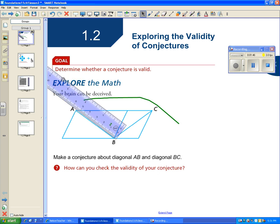So that's how we check the validity of our conjecture. Our conjecture was that AB was longer. When, in fact, we go to measure it, we find them to be the same length.